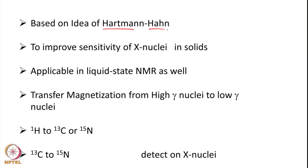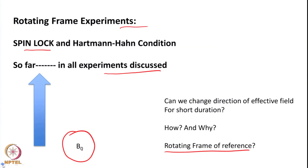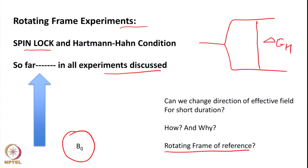This is used for improving the sensitivity of X nuclei in solids. When magnetization is in the Z direction, it is difficult to match the energy gap between proton and carbon — delta E for proton versus delta E for 13C, which is 4 times less. But if we change the effective field direction, we can match the energy gap between proton and carbon. Once matched, we can transfer polarization from proton to carbon, enhancing the sensitivity.